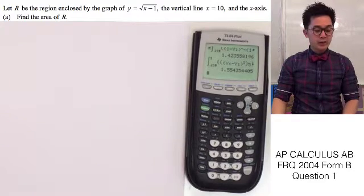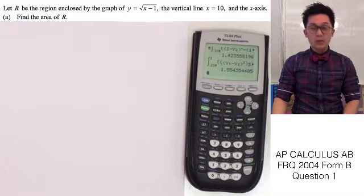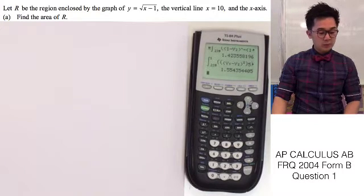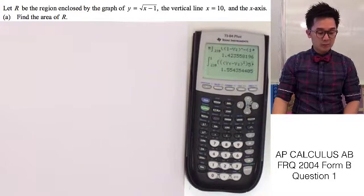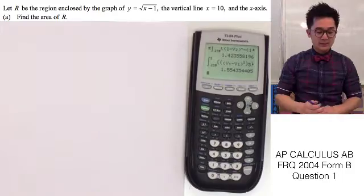Now we're going to answer an FRQ from 2004, Form B, question number 1. In this problem, we are given the region R by the equation y equals square root of x minus 1, the vertical line x is equal to 10, and the x-axis.